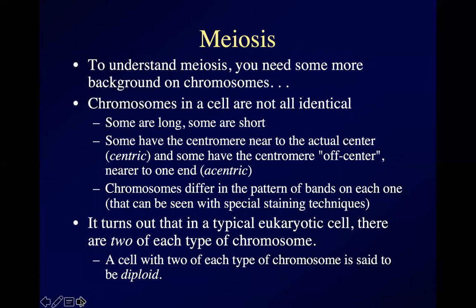You have to remember that chromosomes inside a cell are not all identical. We can take cells from certain parts of your body, squish them, stain them, and take pictures of your chromosomes. Medical professionals do this routinely because you can diagnose certain conditions that way. What you find is that not all chromosomes in a cell are the same — some are long, some are short, some have the centromere close to the physical center, which is called being a metacentric chromosome, and sometimes the centromere is off-center — those are called eccentric chromosomes.